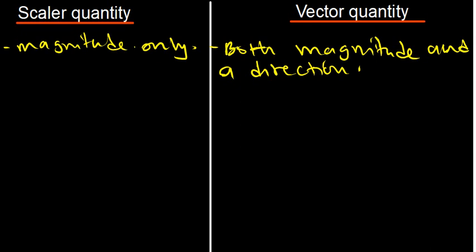When we talk of magnitude, it's the same as size. So when you hear someone say a car moves 20 kilometers south, that is a vector quantity, because 20 kilometers is a magnitude and south is a direction. So let's see some examples of scalar quantity as well as vector quantity.